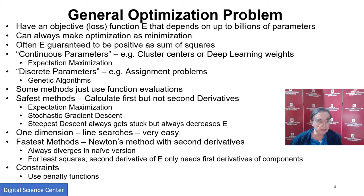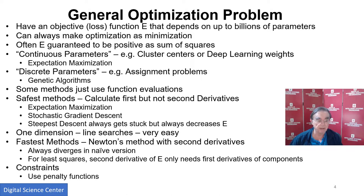Deep learning is characterized by actually using first derivatives. In the days before that, most optimization problems would just use function evaluations, and some people used second derivatives. We have expectation maximization as a general technique. The revolution that deep learning brought to us is stochastic gradient descent, and also ordinary steepest descent, which is a variant but not quite as clever — it always gets stuck. I never used steepest descent, and I didn't know about stochastic gradient descent until I saw it in the deep learning community.